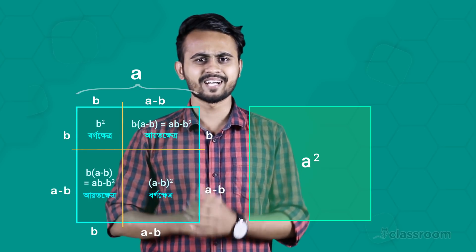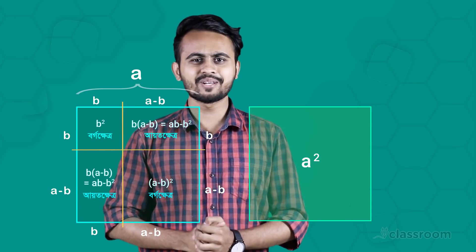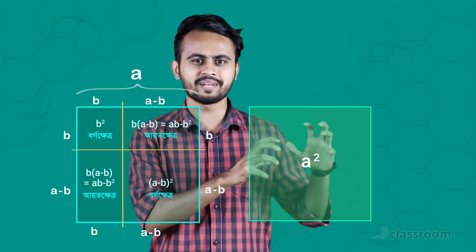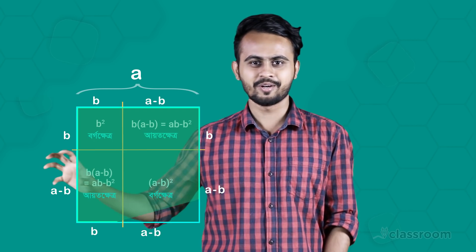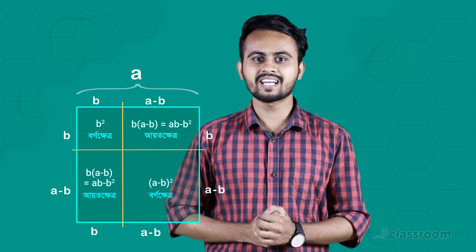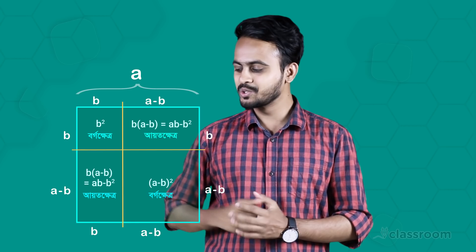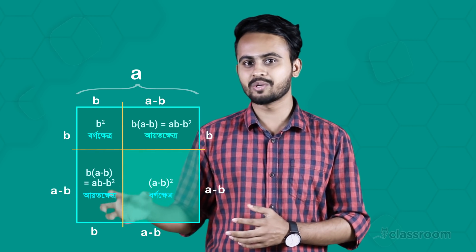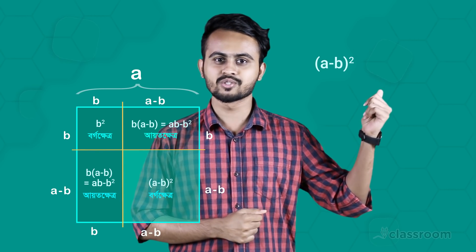a plus b whole square. Okay, so we can see that in this way, we can see that in the 4th place — the 4th place is a minus b whole square.